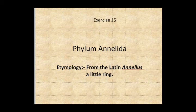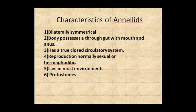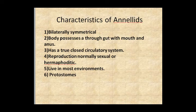We're going to talk about the phylum Annelida. These are earthworms, among a couple other groups, but we're only going to talk about the earthworms. On our evolutionary cladogram, these are protostomes. Some characteristics: bilaterally symmetrical, have a through-gut with mouth and anus, a true closed circulatory system. They're hermaphroditic, producing both sperm and eggs. They live in most environments and are protostomes.